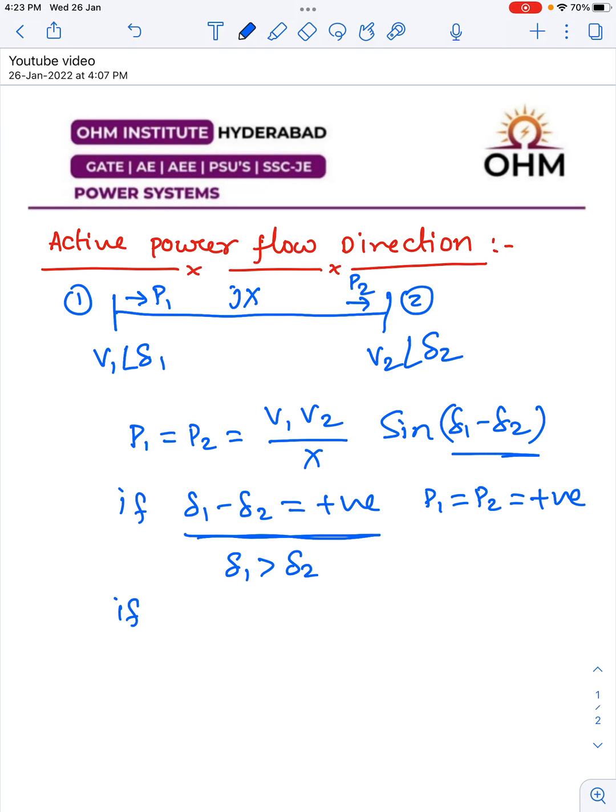Suppose δ1 - δ2 is negative, then P1 and P2 are negative. From this, we conclude that the active power flows from bus 2 to bus 1. In the first case, power flows from bus 1 to bus 2, and in the second case, from bus 2 to bus 1.